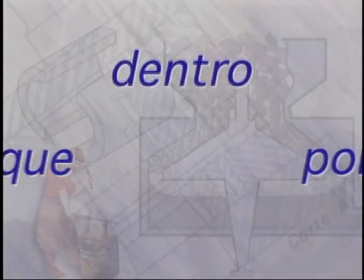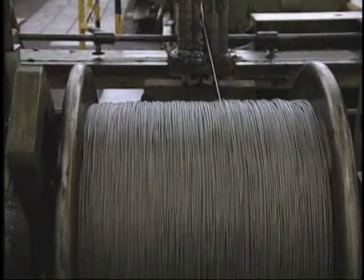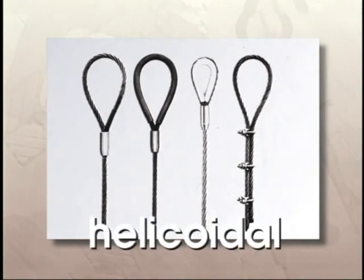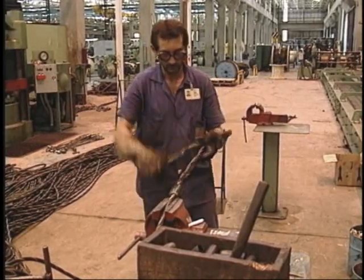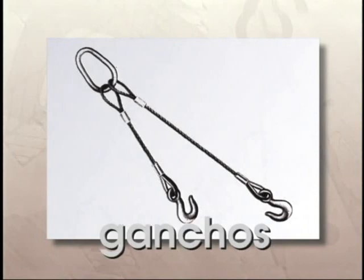Este cabo de aço é pré-formado. A pré-formação nos cabos de aço é feita através de um processo especial de fabricação, que faz com que os arames e as pernas possam ser curvados de forma helicoidal, sem criação de tensões internas. Isso facilita o manuseio e deixa o cabo mais seguro, não havendo necessidade de amarrar as pontas. Depois de prontos, os cabos de aço são fixados em sua extremidade por meio de elos, que são formados pelo trançamento do próprio cabo, ou de ganchos, que são fixados no cabo.